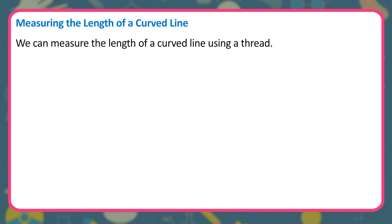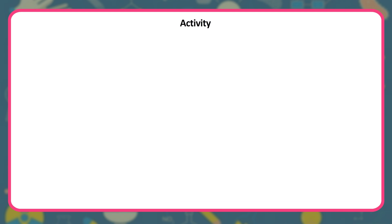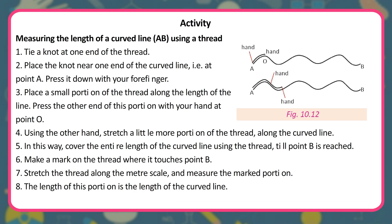Measuring the length of a curved line. We can measure the length of a curved line using a thread. Tie a knot at one end of the thread. Place the knot near one end of the curved line at point A and press it down with your forefinger. Place a small portion of the thread along the length of the line and press the other end with your hand at point O. Using the other hand, stretch a little more portion of the thread along the curved line. Cover the entire length of the curved line using the thread till point B is reached. Make a mark on the thread where it touches point B. Stretch the thread along the meter scale and measure the marked portion. The length of this portion is the length of the curved line.